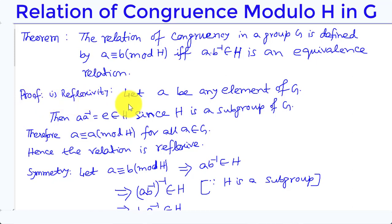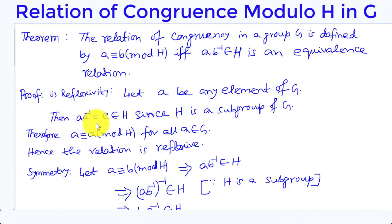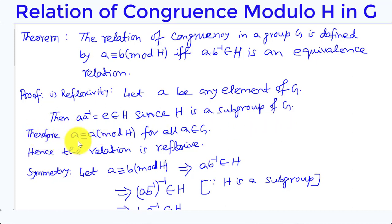Reflexivity: Let A be any element of the group G. Then A·A⁻¹ = E, which is the identity element of G, and E belongs to H since H is a subgroup of G. Therefore, A ≡ A (mod H) for all A belonging to G.